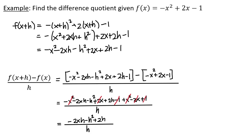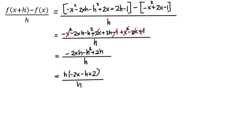This leaves negative 2xh minus h squared plus 2h, all divided by h. Factoring h out of the numerator gives h times (negative 2x minus h plus 2) all over h. Rather than cancelling, recognize that h over h is a factor of 1 and can be eliminated. So the difference quotient simplifies to negative 2x minus h plus 2.